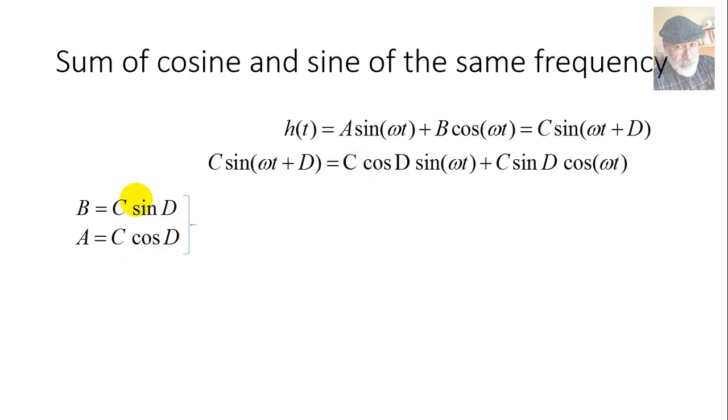Two equations, two unknowns, C and D. Non-linear, but two equations. Divide them. Yeah, divide them. B over A and dividing C cancels out and you get sine of D divided by cosine of D. Does that bring memories? Sure, sine divided by cosine. That was tangent of D. So, the tangent of D is B over A. That's how we find D, the arctangent of B over A, the amplitude of the cosine divided by the amplitude of the sine.